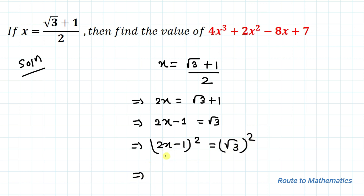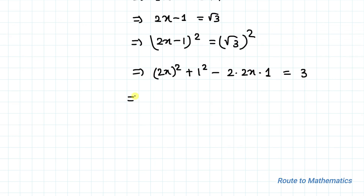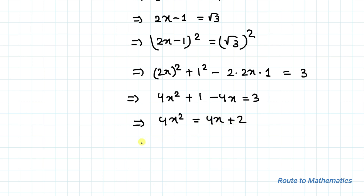Now squaring both sides, we have (2x - 1)² = (√3)². Applying the algebraic identity (a - b)² = a² - 2ab + b², we get 4x² + 1 - 4x = 3. This gives us 4x² = 4x + 2, and taking 2 as common, we get 2x² = 2x + 1. Let's call this Equation 1.